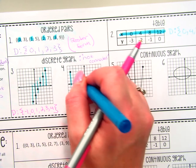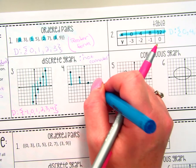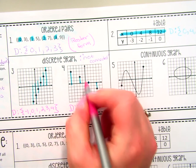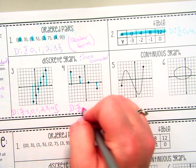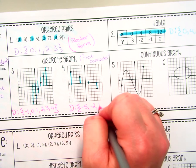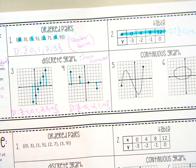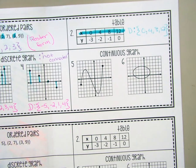Same thing with this discrete graph — the domain here would be 1, 2, 3, 4, negative 5, negative 2, positive 1, and 4. It's the x portion of those points — that is your domain. For a continuous graph, that's when we want to use either interval notation or set builder notation.